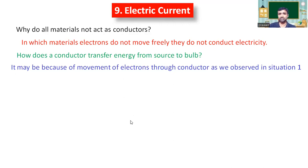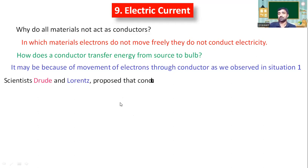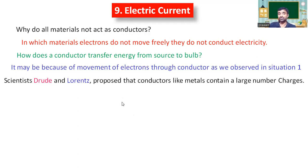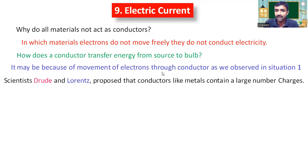So it may be because of the movement of electrons through a conductor that current is observed. There is no doubt to accept this. One theory was proposed by Drude and Lorentz at the beginning of the 20th century. They proposed that conductors like metals contain a large number of charges — both positive charges and negative charges — present in a metal wire.